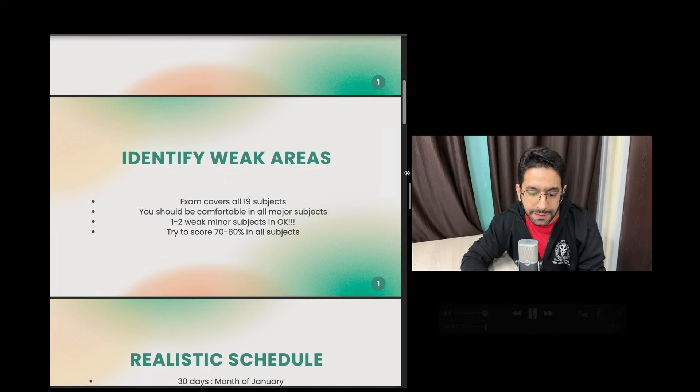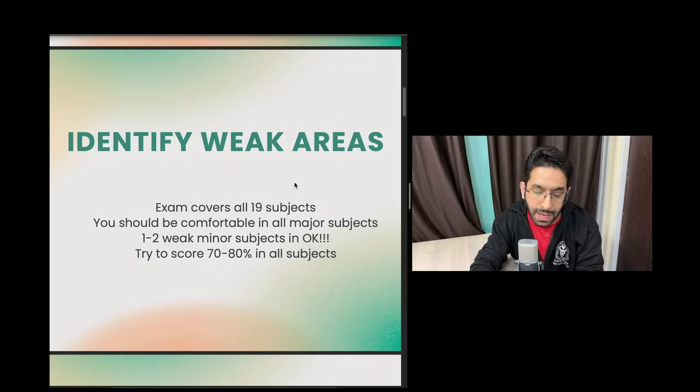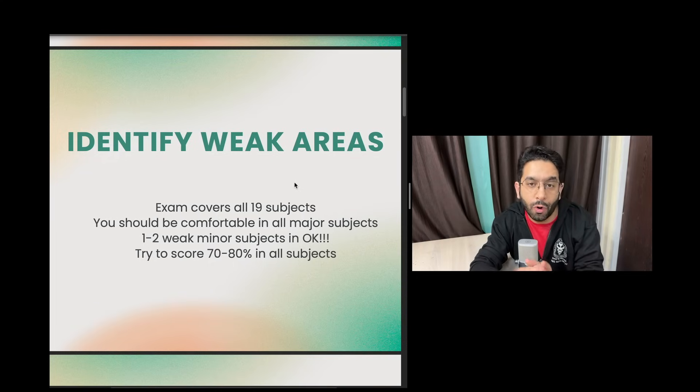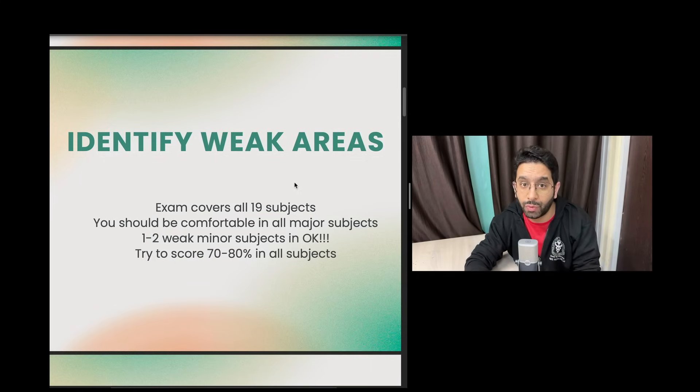The first thing I want to focus on is you need to identify weak areas. This exam is about all 19 subjects. At minimum you should be comfortable with all the major subjects because they will form the major chunk of the question paper. You should not be weak in subjects like Medicine, Surgery, Obstetrics, Pathology, or Pharmacology. Then you should be strong even in most of the minor subjects. It's not mandatory that you master all the minor subjects - it's okay to have one or two weak minor subjects. At my time I was weak in Orthopedics and probably Anesthesia.